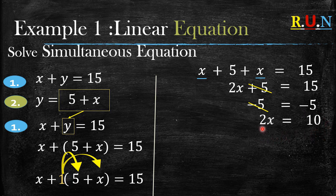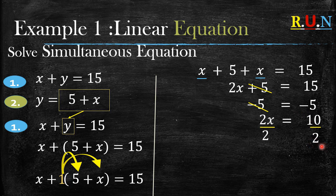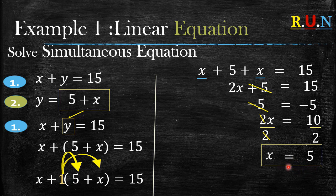Two x means multiplication, so we cancel it out by division. We divide both sides by two: two divided by two cancels out and x is left. Ten divided by two is 5, and just like that you have found the answer for x. So x equals 5.